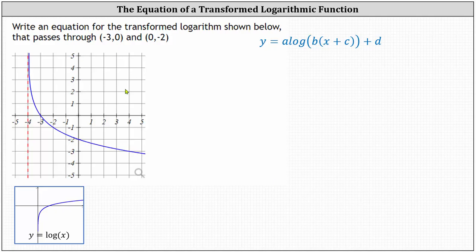We're also writing an equation for the transformed logarithm shown below that passes through negative three comma zero, the x-intercept, and zero comma negative two, the y-intercept.